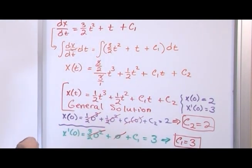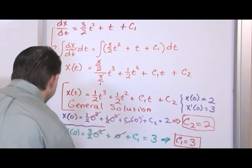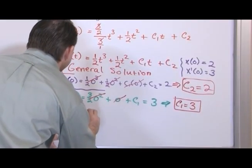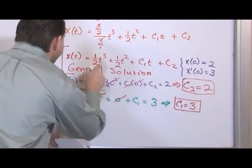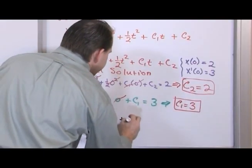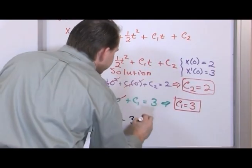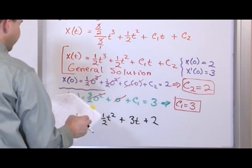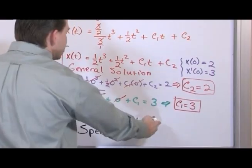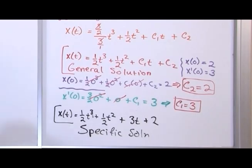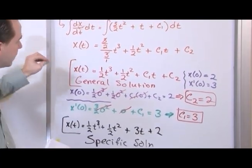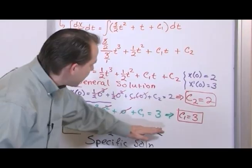Now that we have both constants, we can write the specific solution. x of t equals 1 half t cubed plus 1 half t squared plus c₁ times t plus c₂, which is 1 half t cubed plus 1 half t squared plus 3t plus 2. This is the specific solution. The general solution describes an infinite number of solutions for the differential equation. Our initial conditions drive what the constants are, and that gives us the specific solution.